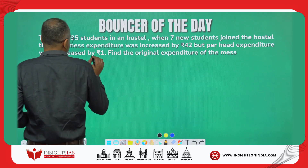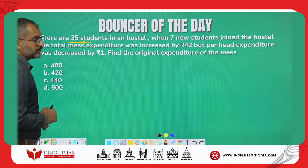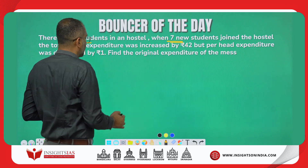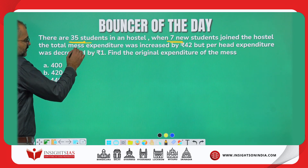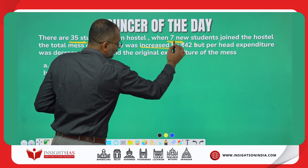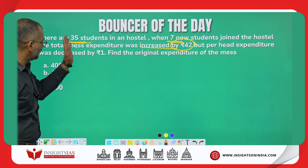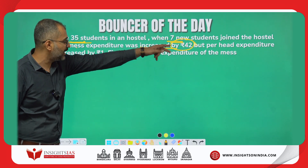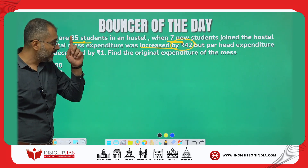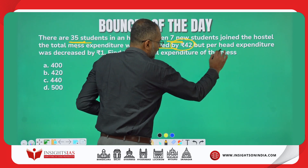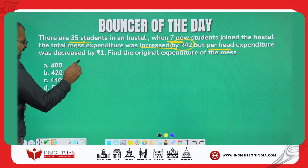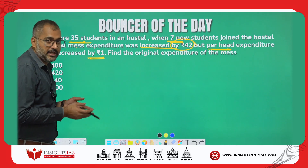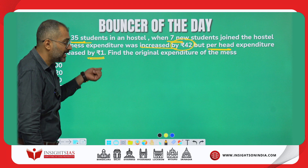This was the bouncer question: there are 35 students in a hostel. When seven new students joined, the total mess expenditure increased by rupees 42. If more people are eating, the expenditure has to increase. But the per head expenditure decreased by rupee one — like a wholesale effect where more people eating means less per head.